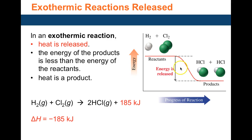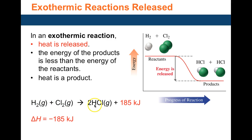In an exothermic reaction, when bonds reform, the system stabilizes. All the extra energy initially absorbed to break bonds is released because the products are more stable and have less energy than when they started. That energy release is delta H, which is negative because the heat of the products is less than that of the reactants. The balanced equation includes energy on the product side, and the unit is kilojoules.